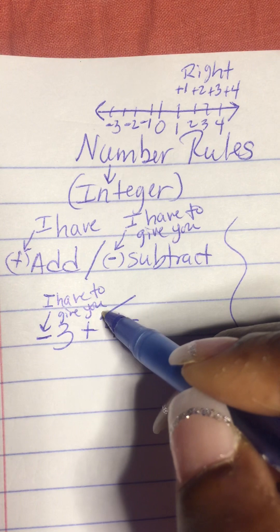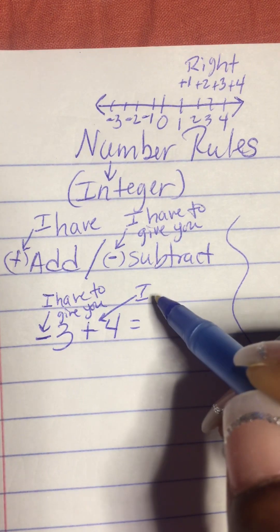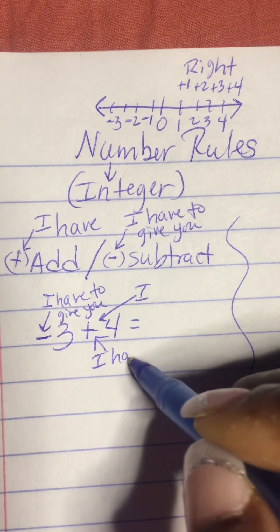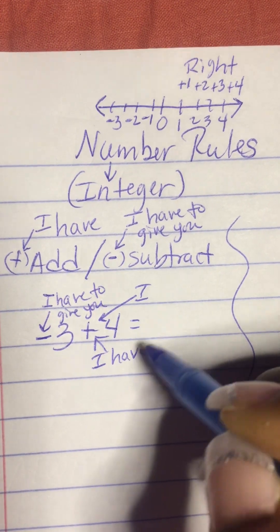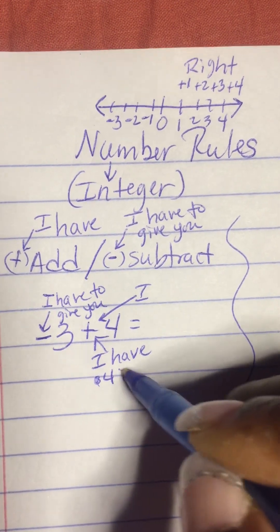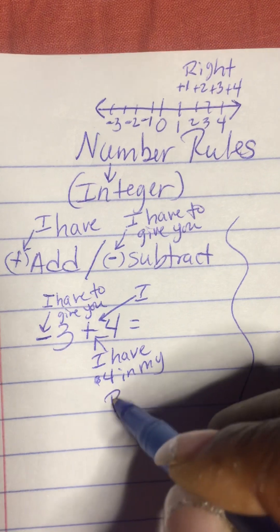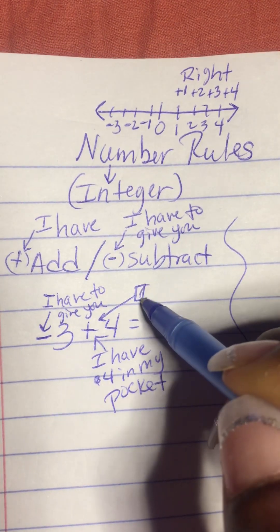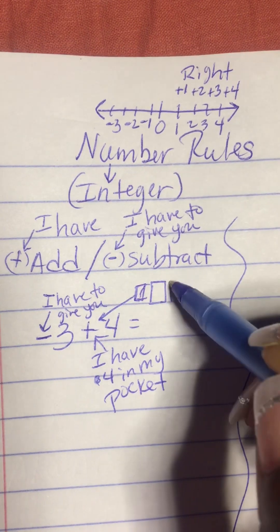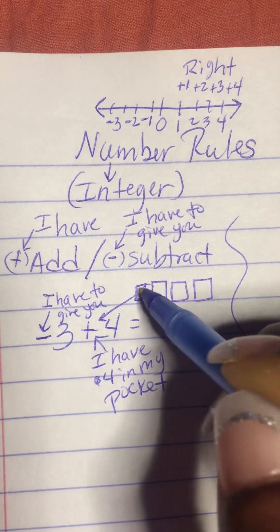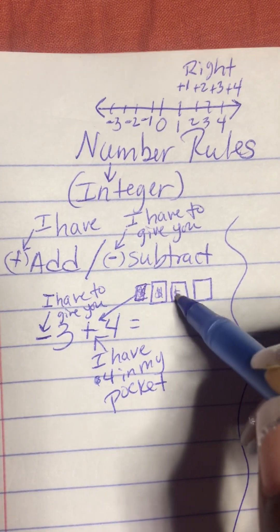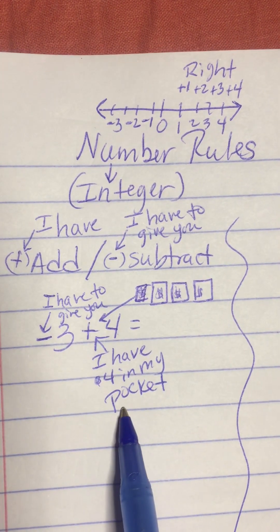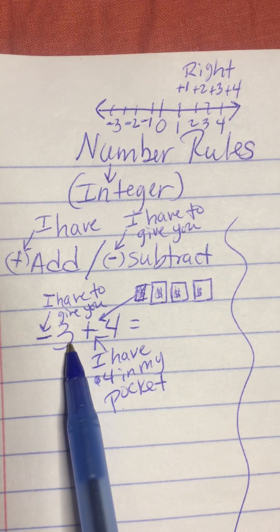Remember, this positive means that I have — let's say $4 in my pocket. So I'm going to draw $4 bills up here: 1, 2, 3, 4. If I have $4 in my pocket and I have to give you 3...